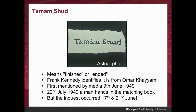This is an actual photo of the Tamam Shud slip. These are Persian words meaning 'finished' or 'ended' — Tamam means finish and Shud is an auxiliary verb putting it into the past tense. No one knew what this meant at the time, but a journalist called Frank Kennedy identified that this is from a poetry book called The Rubaiyat of Omar Khayyam. The media first mentioned it on the 9th of June, and a man read the media articles and on the 22nd of July handed in the matching book that this piece of paper had been torn from. Unfortunately the inquest had already taken place on the 17th and 21st of June, so the book was never discussed in the inquest — it missed by a month.